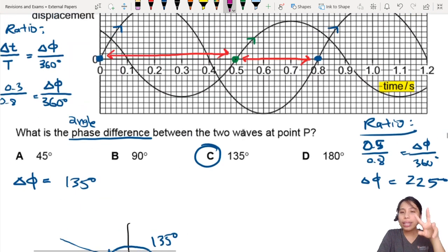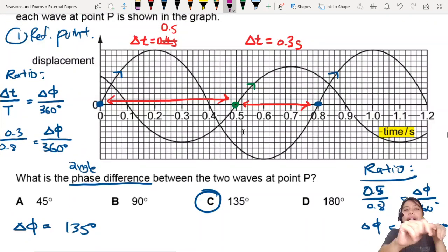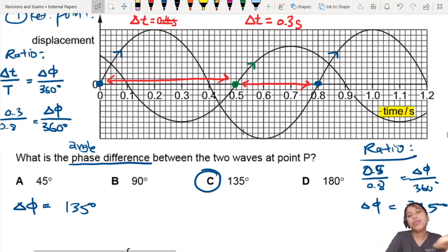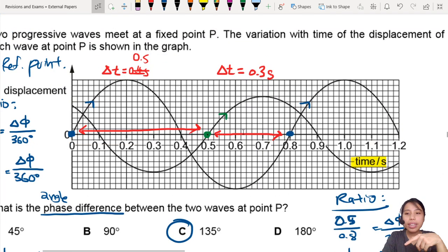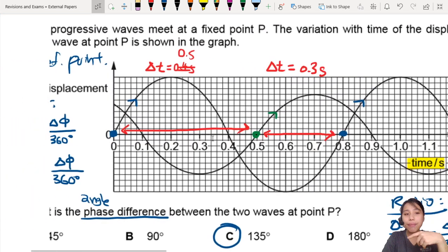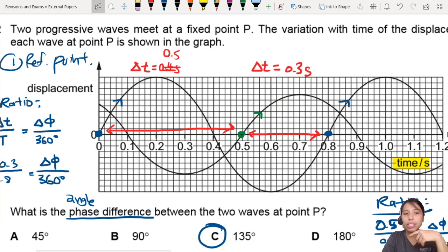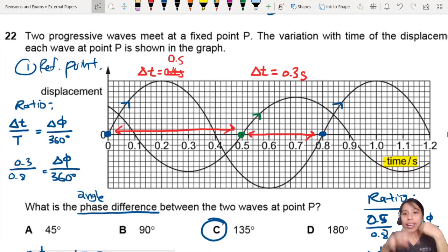Keep that in mind. There are two possible ways. Best is you mark out all the reference points and then you do your comparison like this. Hopefully that was helpful in helping you understand phase differences a little better, especially when you have time on the x-axis. That's all for this question. I will see you in the next one.